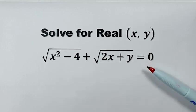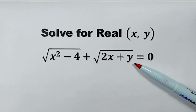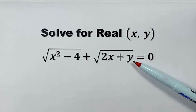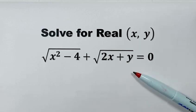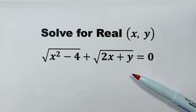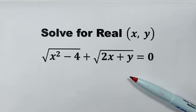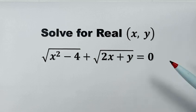So here we have one equation but with two variables, and the two variables are under square roots. Then how do we solve this question?